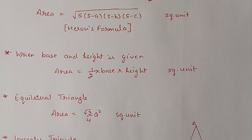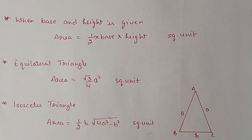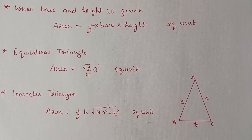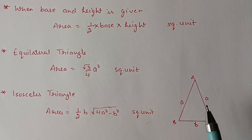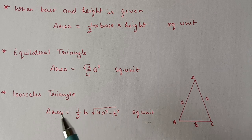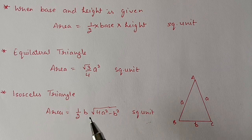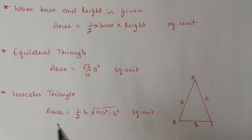The last formula is for an isosceles triangle, when two sides are equal and the third is different. In that case you can use the formula: area = (1/2) × b × √(4a² − b²). This formula is also derived from Heron's formula only.